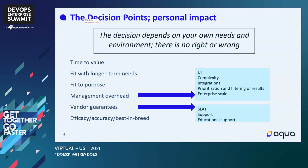Management overhead means different things to different people. Is money more important than time in your particular organization? That will look different from open source to commercial. This is probably one of the decision points nearly guaranteed to be similar across every open source to commercial spectrum: open source is less on price, more on time. Commercial is the opposite — more on price, less on time, so you don't have to spend as much time using it.